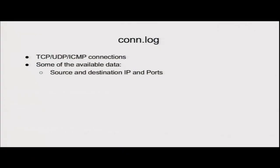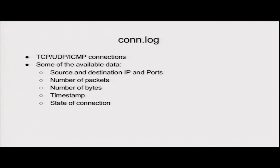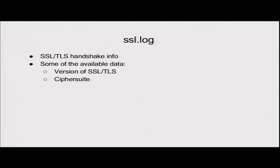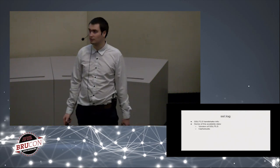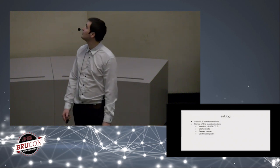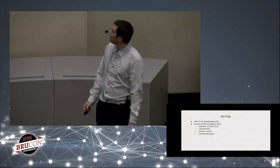The conn log contains TCP, UDP, and ICMP connections with source and destination IP addresses, number of inbound and outbound packets, timestamp in Unix time, connection state (established or not), and connection duration. The SSL log describes the SSL handshake and contains TLS version, the chosen cipher suite, server name, and certificate path.